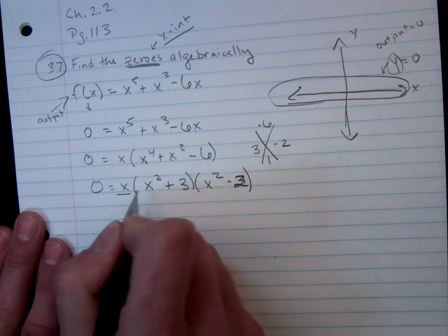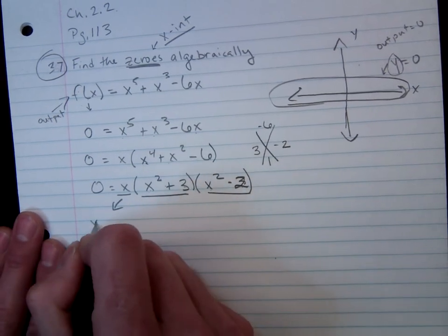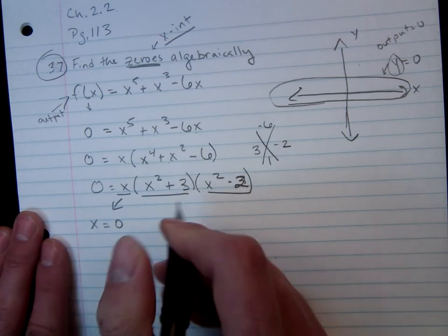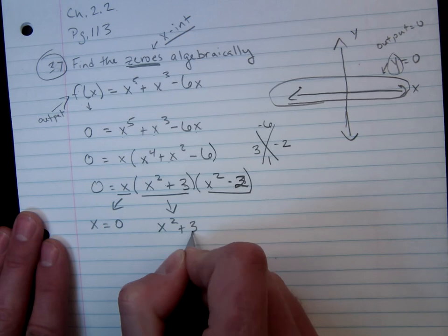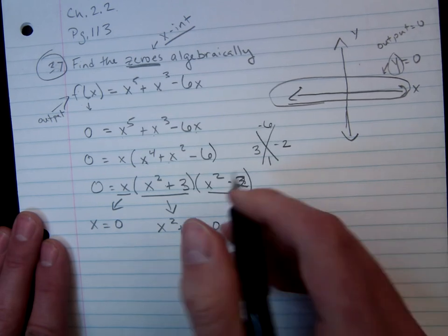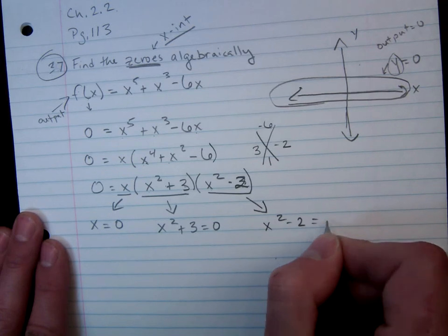Now, with the zero product property, I'm going to take each individual factor and set it equal to zero. So I get that my roots are x equals zero, x squared plus 3 equals zero, and x squared minus 2 equals zero.